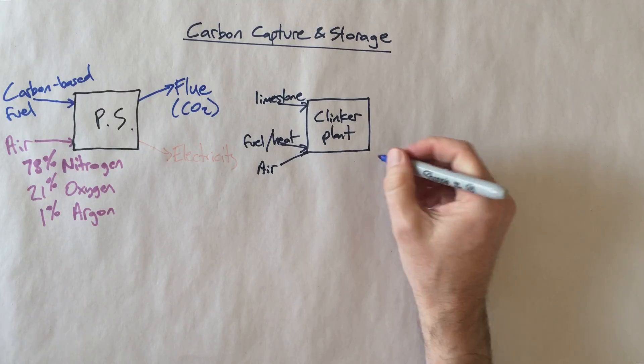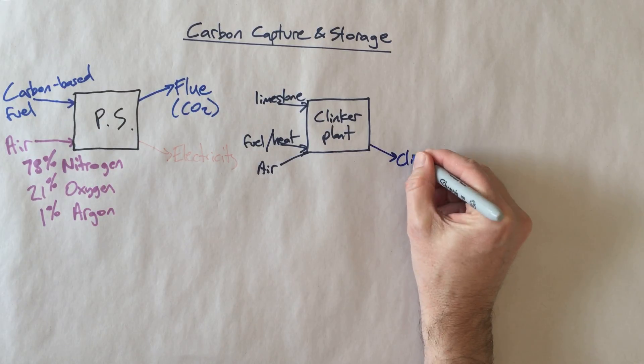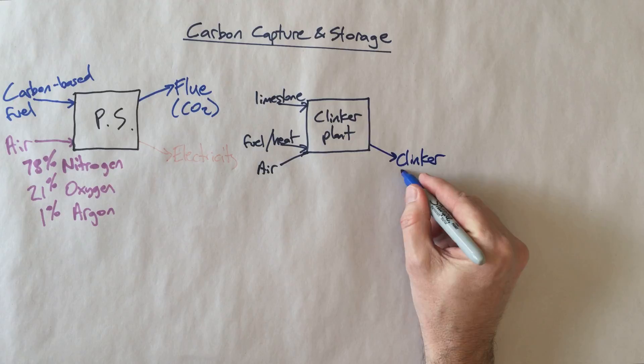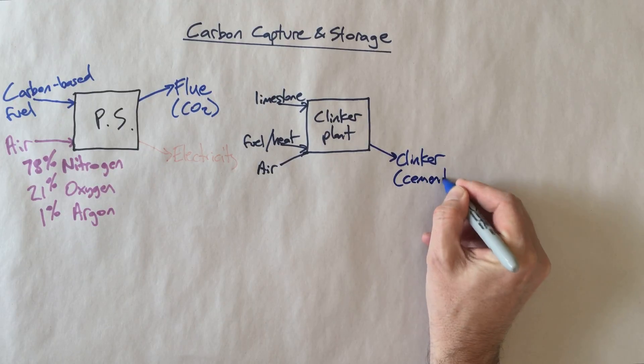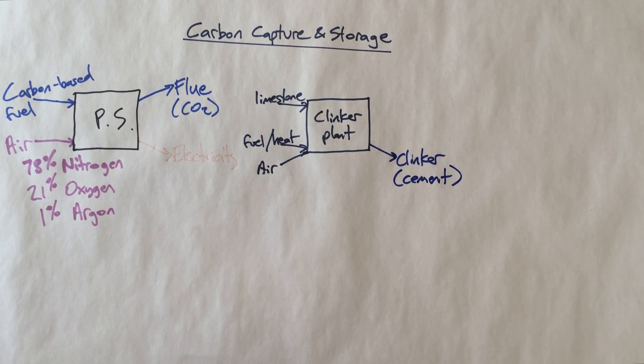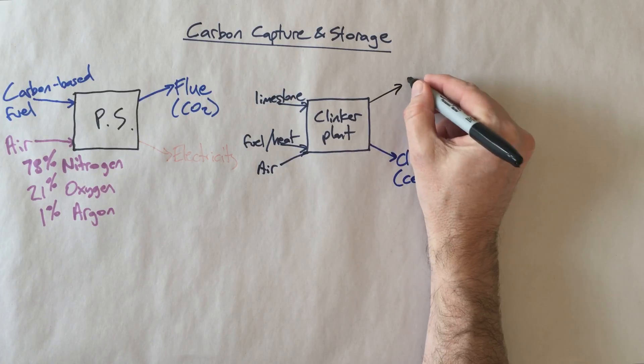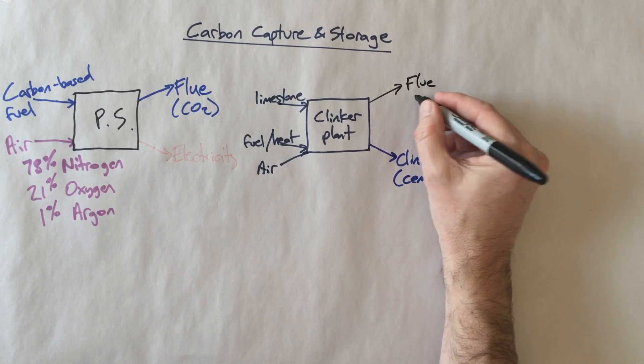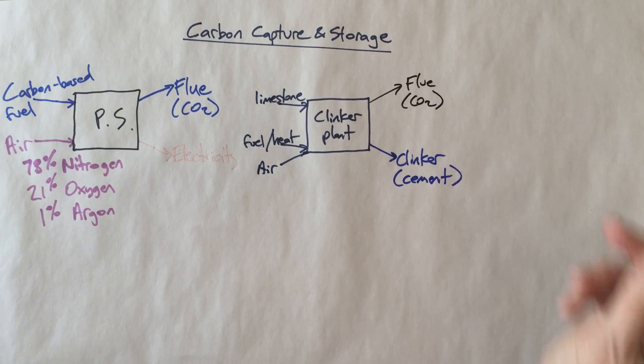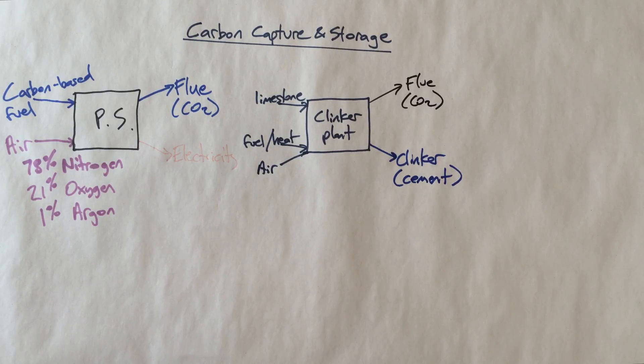And what do we get out of that? We get some clinker. That's our product that we want, which ultimately goes on to make cement, which we can use to make concrete. And again, we produce a flue gas, which contains CO2. And you say, well, okay, so what? So what are we going to do about that?